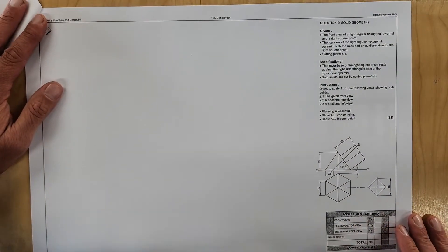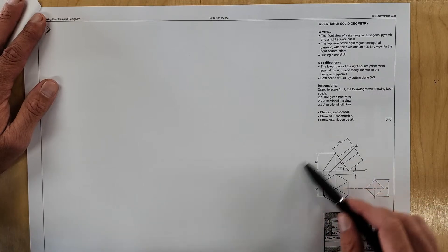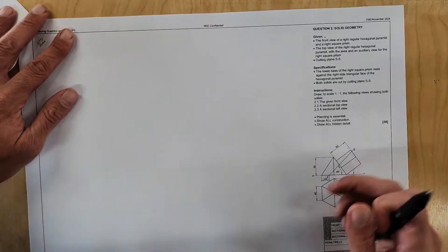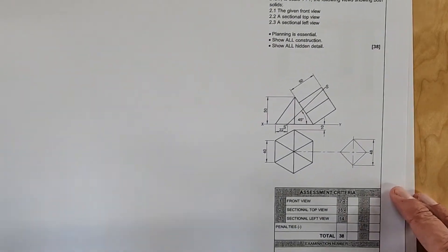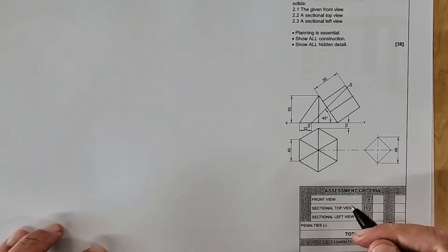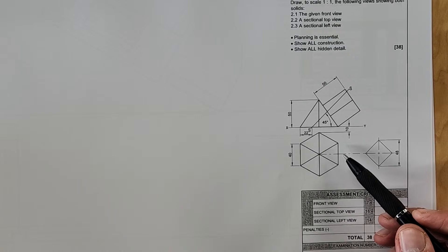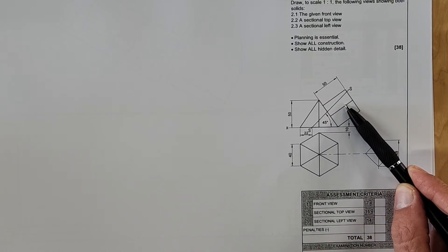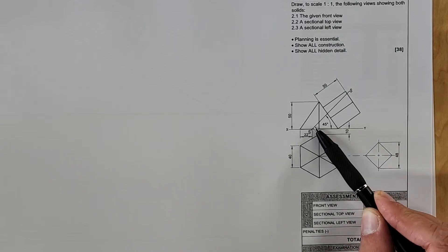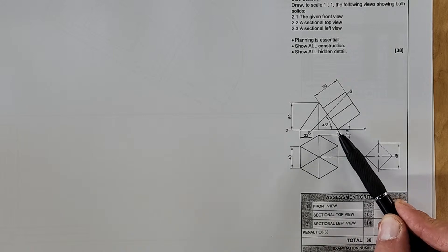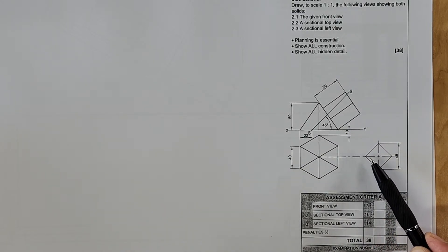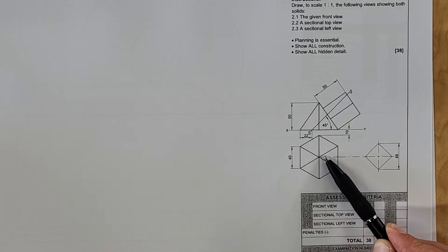Let's look at what was given here. It says the front view, which is of course this one, of a right regular hexagonal pyramid - there it is, we're seeing in the front view the two sides - and a right square prism, so there it is on its side, actually just standing on that bottom corner. The top view of a right regular hexagonal pyramid, there's the top view of that with the axis and auxiliary view. What's interesting here, this axis is in line with the axis of the hexagonal pyramid, so that is nice to see, straight line there. There's a cutting plane at 45 degrees.